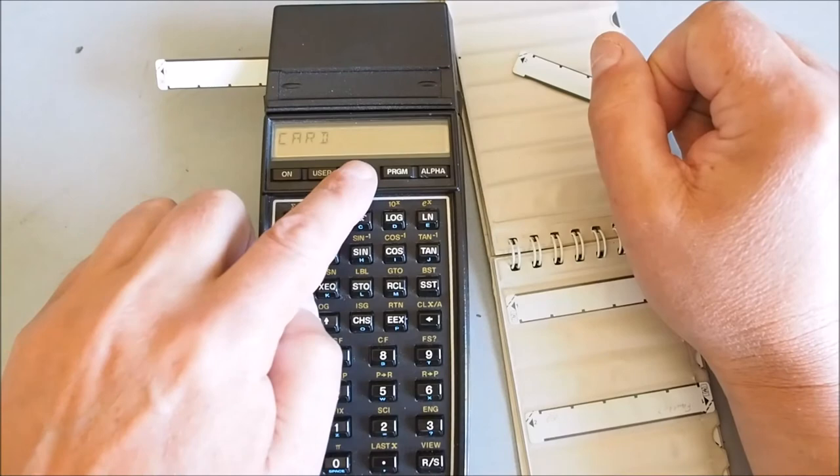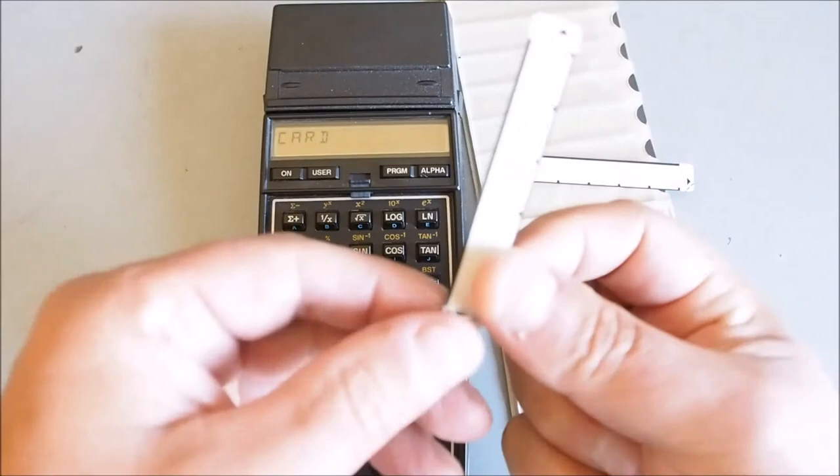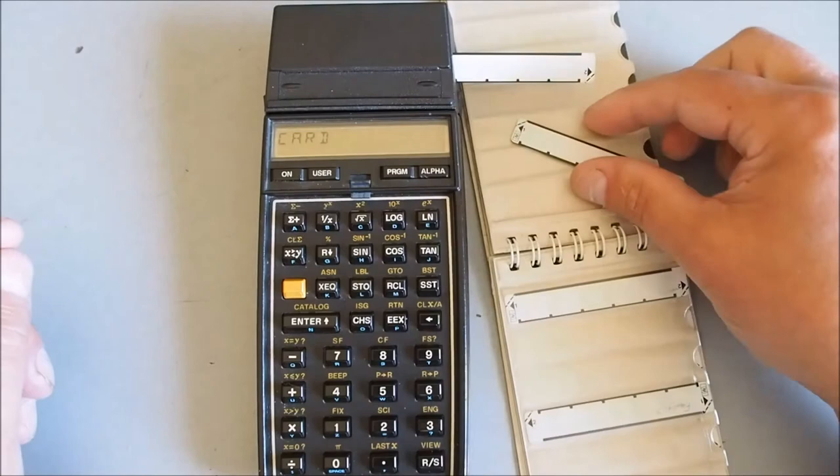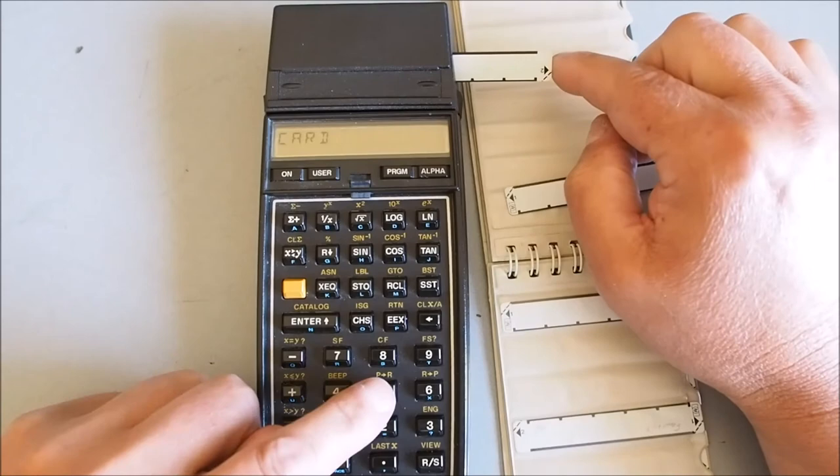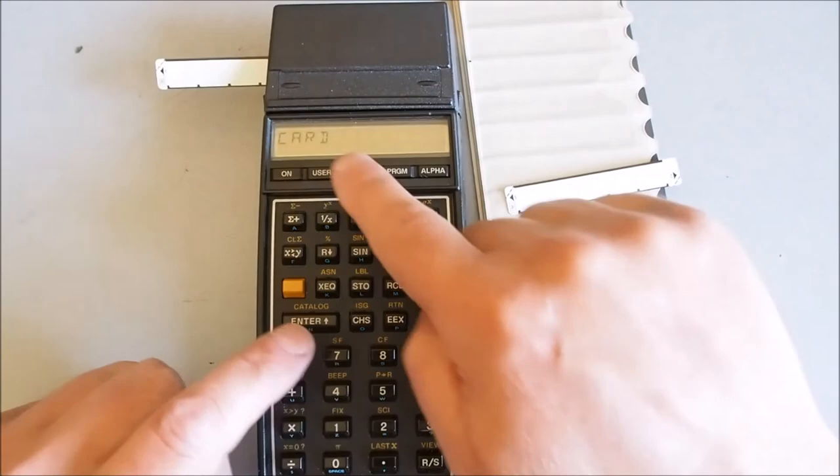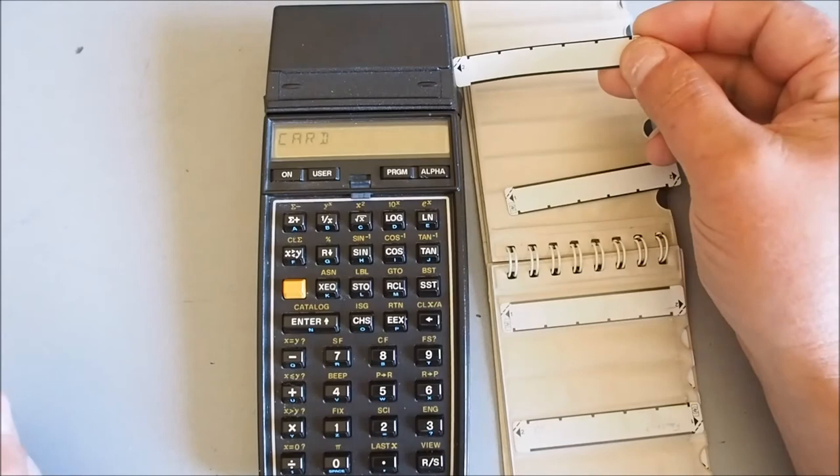So that was track three, that was the second card. You'll see it pop up with the track number and a number beside it. P means it's a program card and it's TR1 was track one of a program and this is track two.